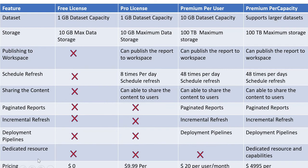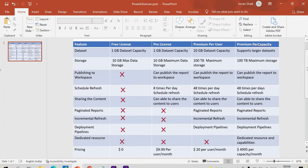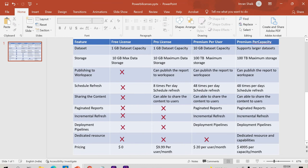Now for pricing: Free license is zero cost. Pro is $9.99 per user per month. Premium Per User is $20 per user per month — so for 10 users that is $200 per month. Premium Per Capacity is $4,995 per capacity per month.